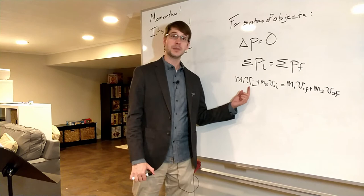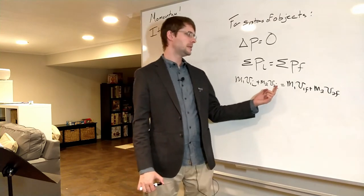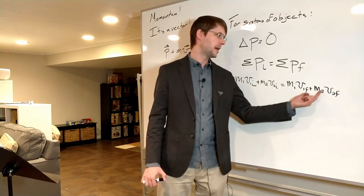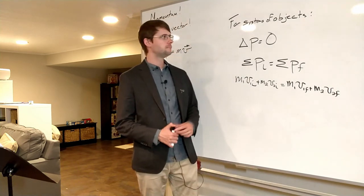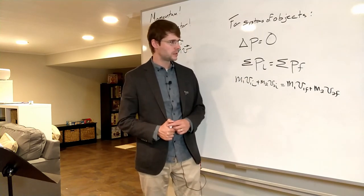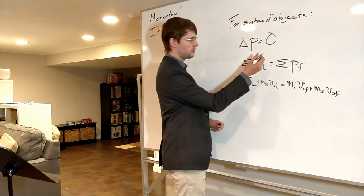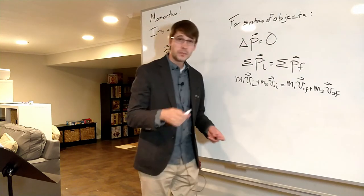Mass 1 times initial velocity 1 plus mass 2 times initial velocity 2 is equal to mass 1 times final velocity 1 plus mass 2 times final velocity 2. That's basically the way that this works. If you've got multiple objects they're coming together, and of course these are all vectors even though I didn't write the vector symbol on them.